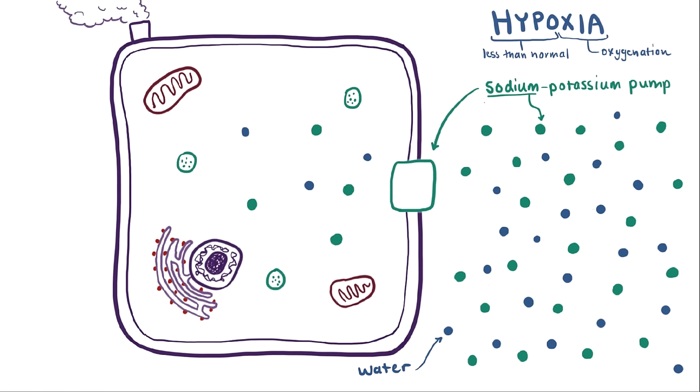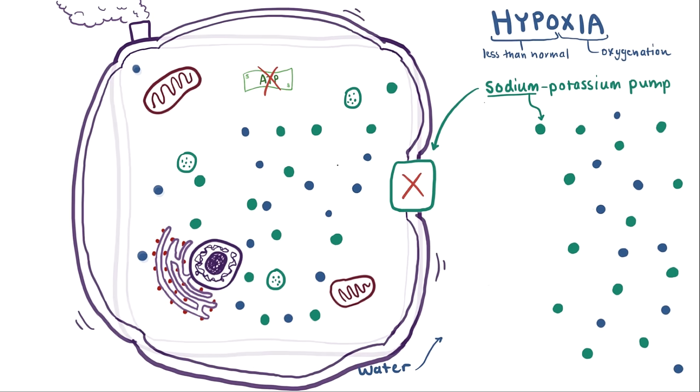But our pump doesn't do all this for free, and it needs ATP. So without ATP, it stops pumping sodium back out, and sodium starts to diffuse in. And it keeps diffusing in and the concentration gradient goes away. Now with less sodium molecules on the outside blocking the water molecules from going into the cell, water follows the sodium in, which causes the cell to swell up.